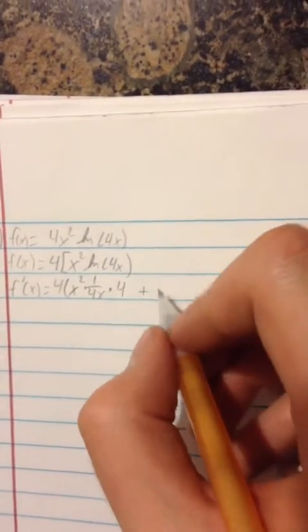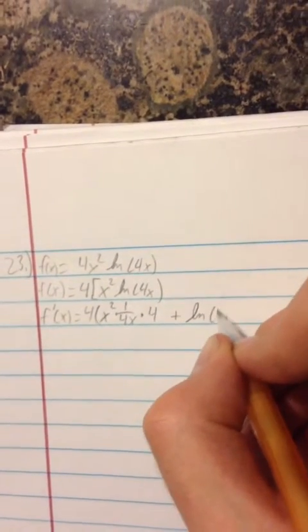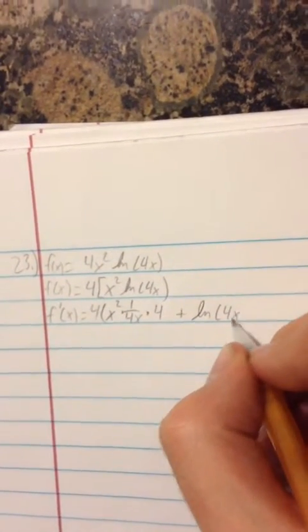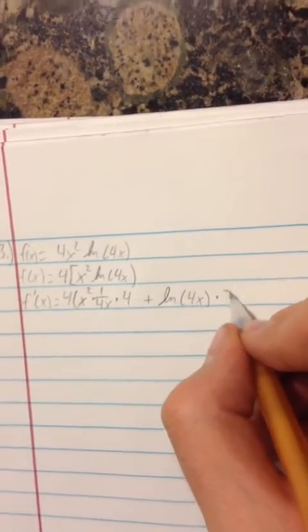Plus, let's see, the second which is natural log of 4x times the derivative of the first which is 2x.